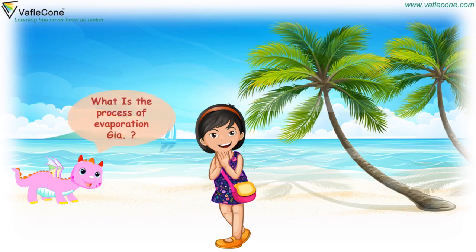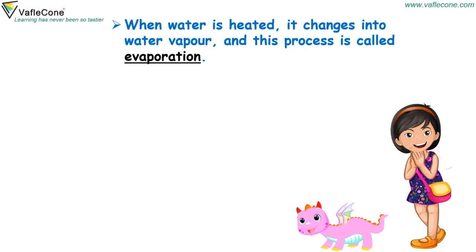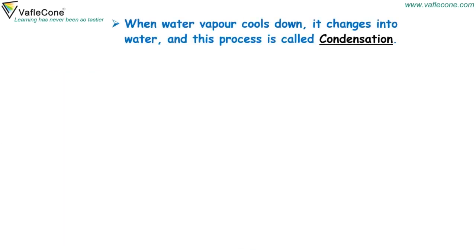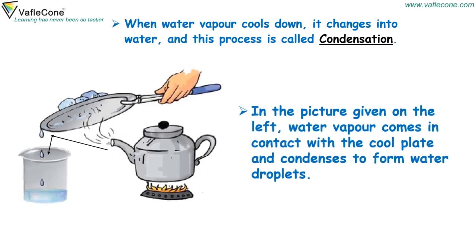What is the process of evaporation, Jiya? When water is heated, it changes into water vapour and this process is called evaporation. When water vapour cools down, it changes into water and this process is called condensation. In the picture given on the left, water vapour comes in contact with a cool plate and condenses to form water droplets.